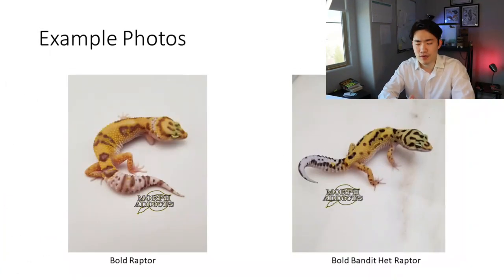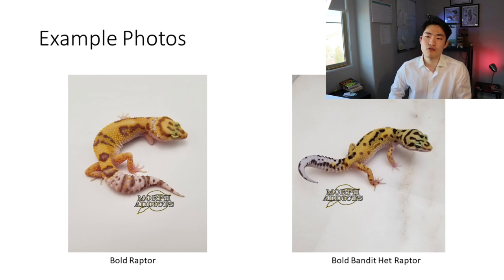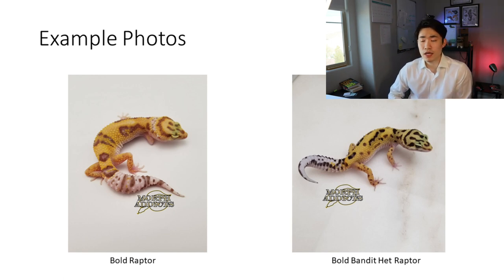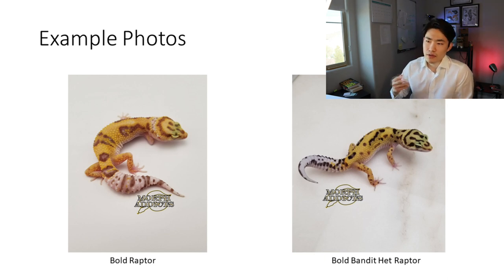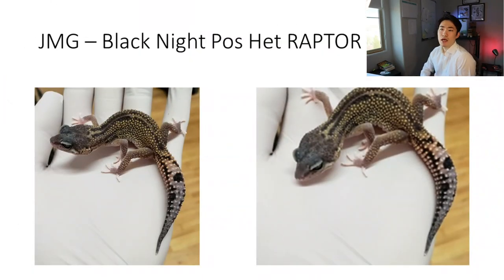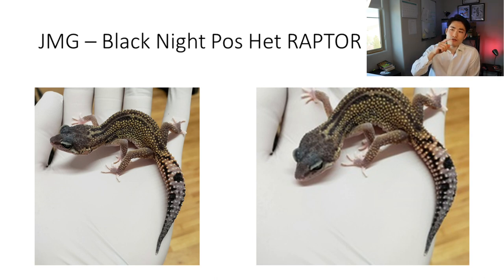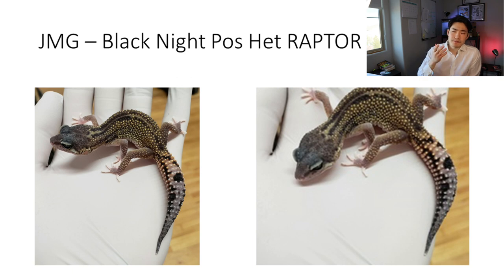Going to the example photos, I couldn't really find good examples on Google everywhere, so I went to Morph Market to find some. One on the left is the Bull Raptor, which has a bull pattern, and one on the right is a Bull-Banded Het Raptor. The next example is from JMG — it's a Black Knight Possible Het Raptor. People often want to know how to differentiate the possible het Raptor from the Raptor: when they have a het Raptor, sometimes they may not have the visual Eclipse or visual Tremper.